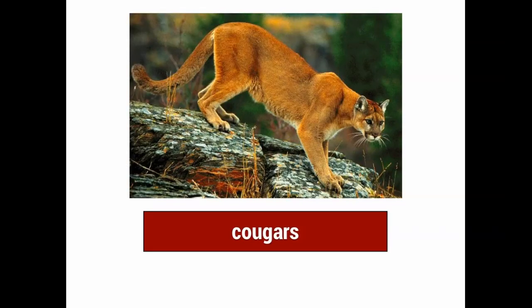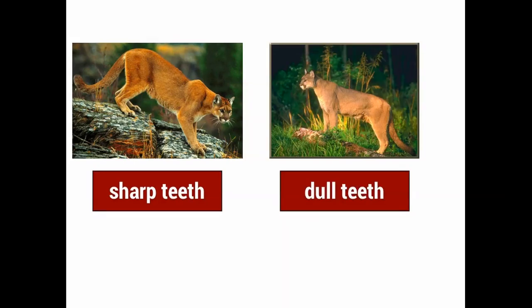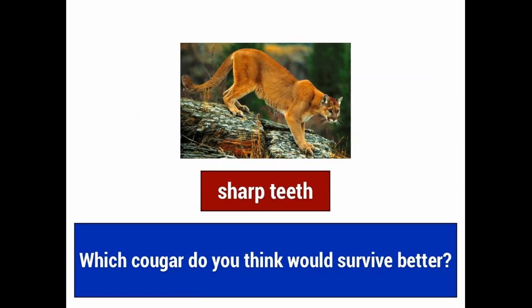One example we could use is the cougar. Imagine one cougar that has very sharp teeth, and imagine another cougar that has very dull teeth — dull means not very sharp. Which cougar do you think would survive better? Obviously, the cougar with the sharp teeth would probably survive better than cougars with dull teeth. In this case, nature has made the decision as to which animal will survive better.